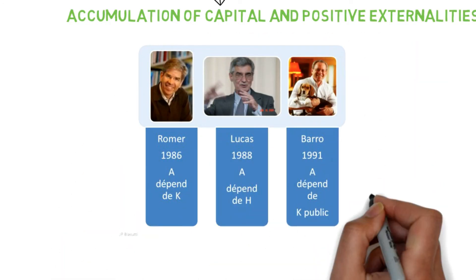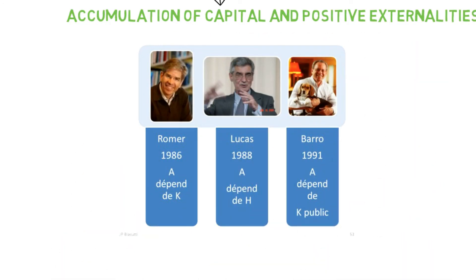The theory of Endogenous Growth was refined by three economists. First, Romer, who considers innovative physical capital as the engine of growth. Then Lucas, who considers human capital as the source of economic growth. And finally, Barro, who considers public capital as the source of growth.